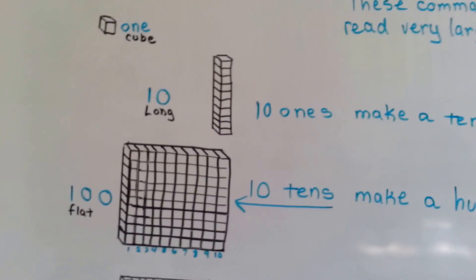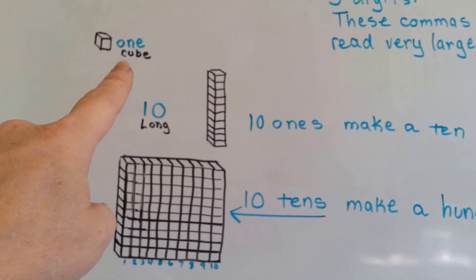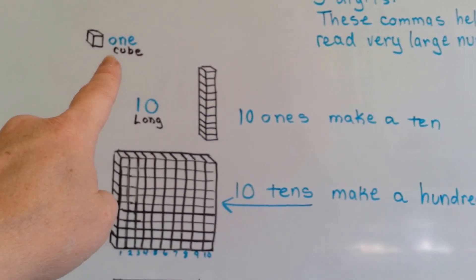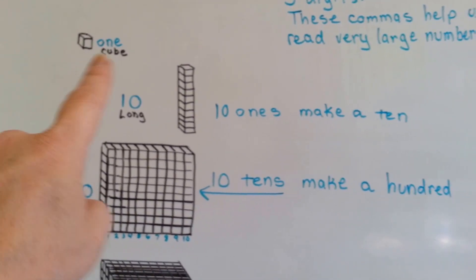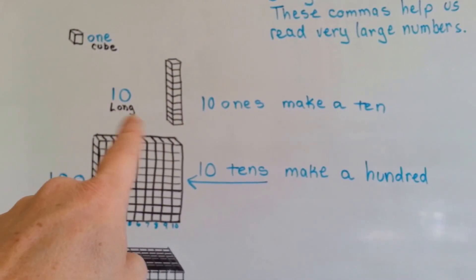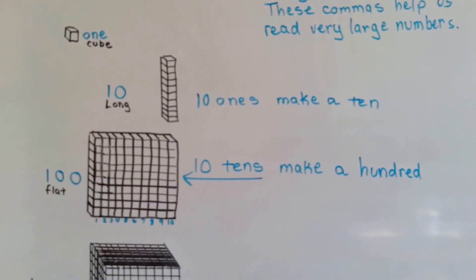Right here, we have one little cube. Just one. One cube, like an ice cube, or a cube of sugar, or one little block. If you have ten of them together, it makes what's called a long, and that's ten. That's a bar. It's a long of ten.